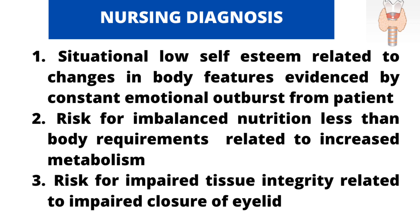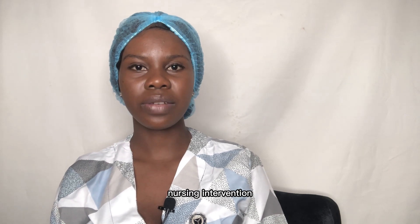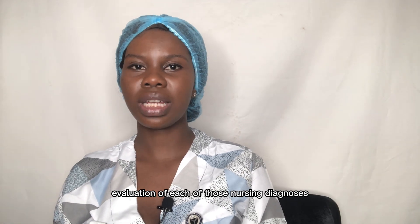The second diagnosis is risk for imbalanced nutrition, less than body requirements, related to increased metabolism. A patient with hyperthyroidism will have their metabolic rate increased, so their food digests quickly and the nutrients they need may be less than what's available. The third is risk for impaired tissue integrity, related to impaired closure of the eyelid. Because the eyes may bulge out, the patient cannot close their eyes, creating a risk for injury to the eye and surrounding tissue.